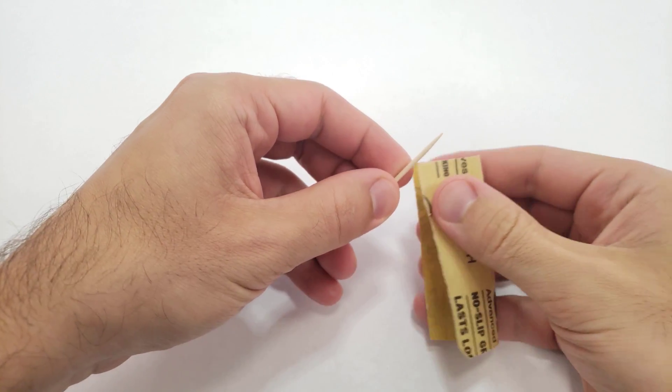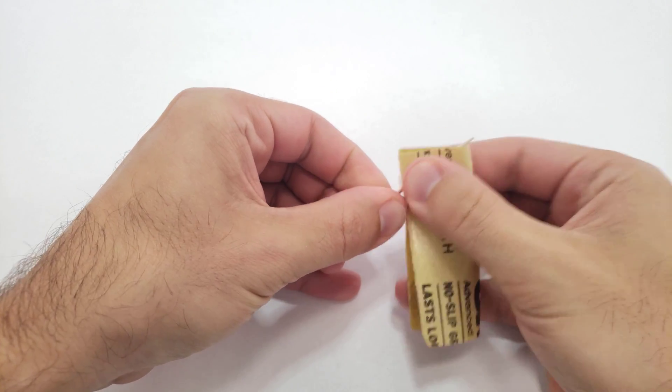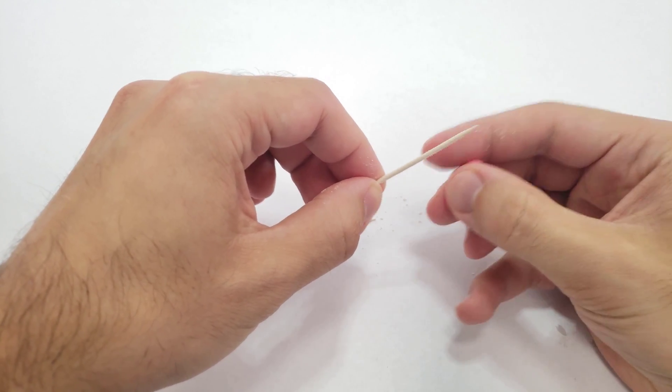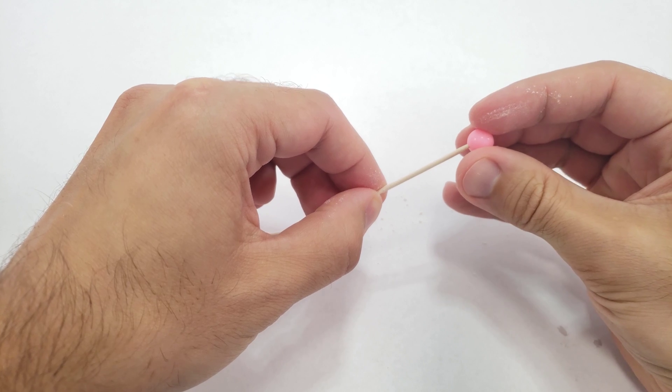Start by lightly sanding two toothpicks to decrease their diameter. Keep sanding until the plastic beads can easily slide onto the toothpicks and spin freely.